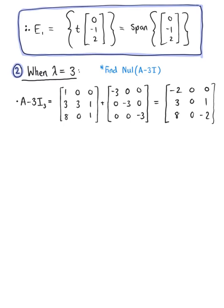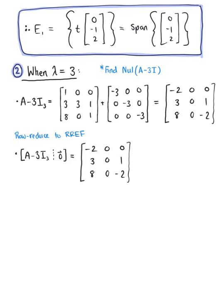We row reduce this matrix to RREF to find all non-trivial solutions. We simplify by multiplying row 1 by negative 1/2 and row 3 by positive 1/2, giving us row 1: 1, 0, 0; row 2 remains 3, 0, 1; row 3 becomes 4, 0, negative 1.